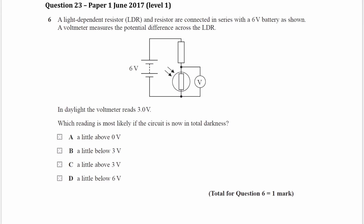We have a light-dependent resistor in series with a regular resistor, and we have a 6-volt cell as well. We have the voltmeter across the LDR, so we're measuring the voltage or the potential difference across the LDR.